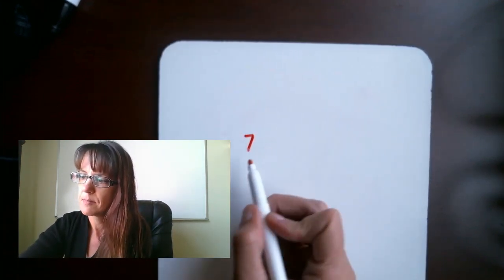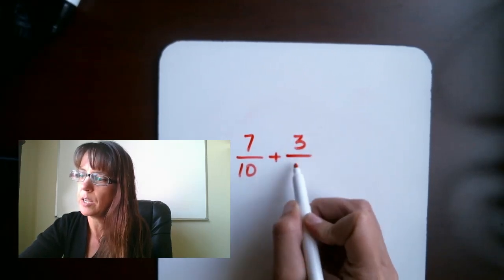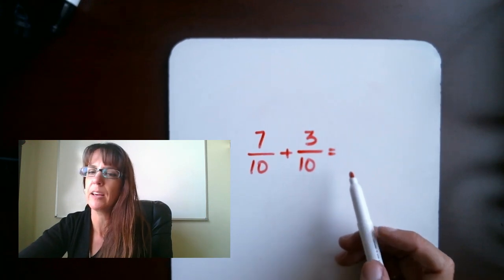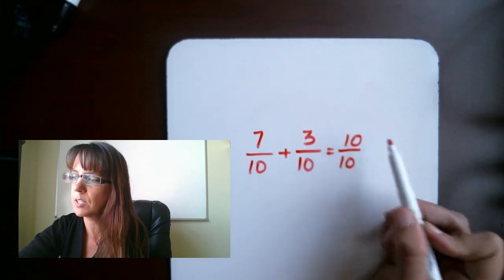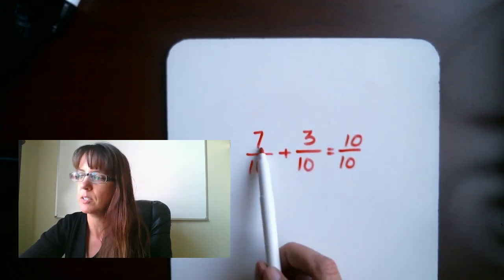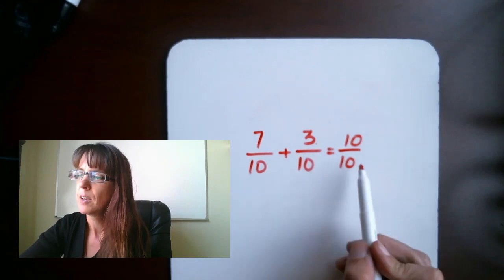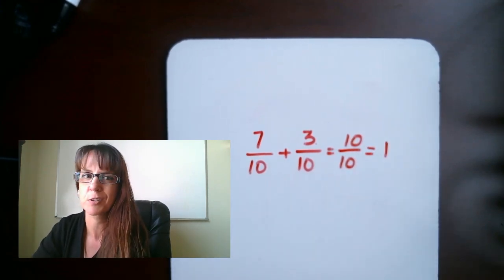First things first, let's do a quick review here. We are going to do 7 over 10 plus 3 over 10. When we're adding fractions, we need what we call a common denominator. We've got one here, 10 over 10. We add straight across the top, we use our common denominator on the bottom. And that reduces down to 1. That was a good warm-up.